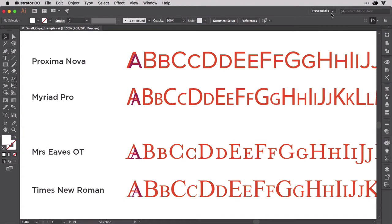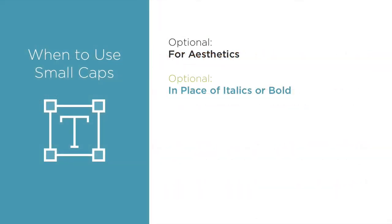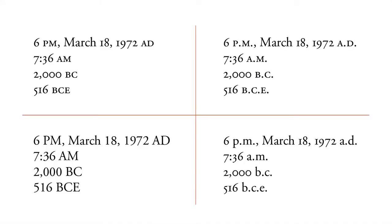I'll start you with the less jarring rule first. Use small caps for time and era abbreviations. The version in the top left corner is correct. Note the use of small caps for am and pm, ad, bc, and bce, which stands for before current era, if you didn't know.